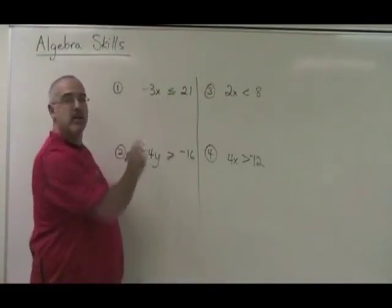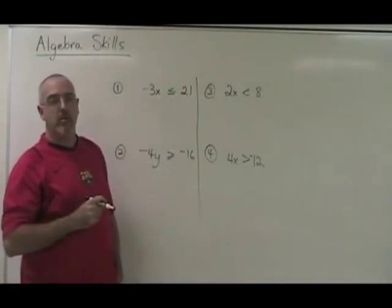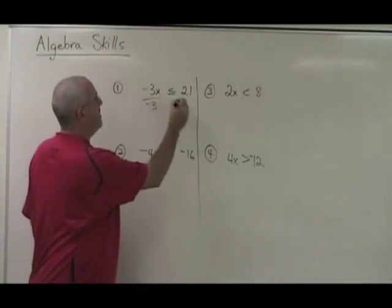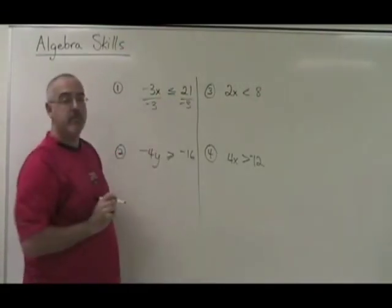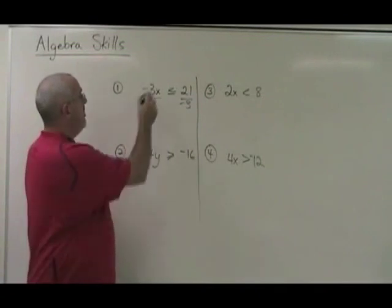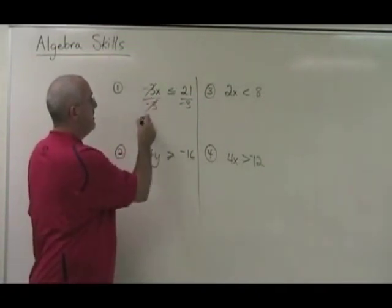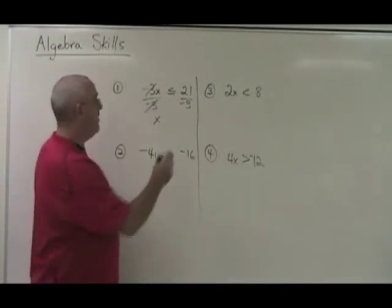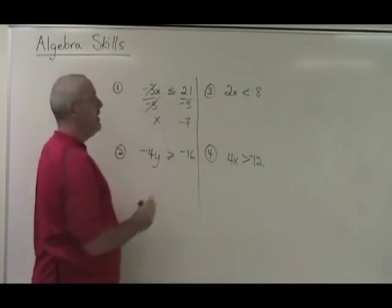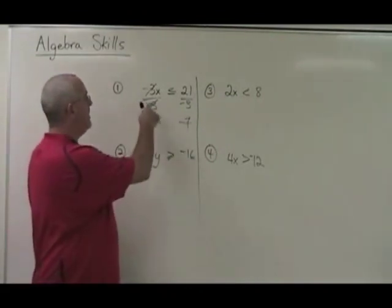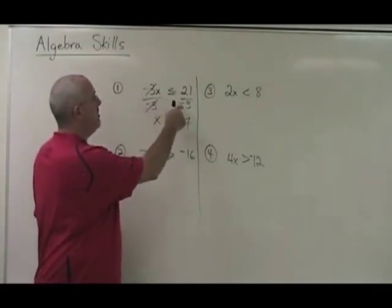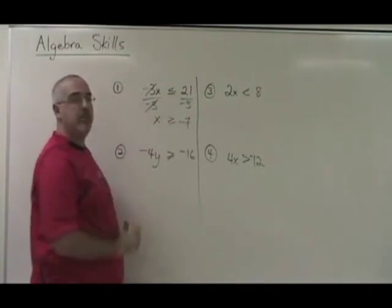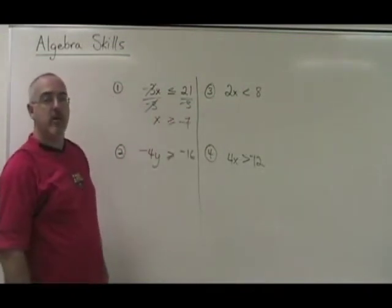In this situation, my x would be multiplied by a negative 3. So I will divide both sides of the equation by negative 3. These will cancel. My x is now isolated, and 21 divided by negative 3 is negative 7. The trick is that because I divided both sides by a negative number, this sign has to turn backwards. It becomes a greater than or equal to sign.